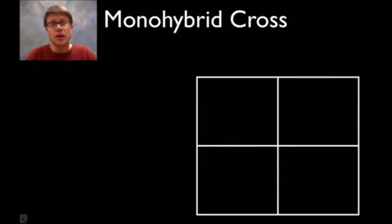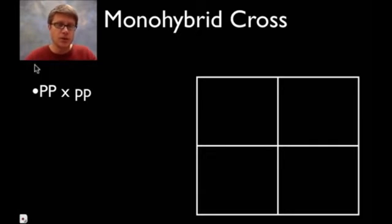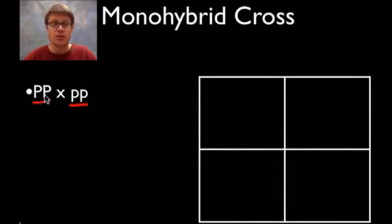Let's start with a monohybrid cross. A monohybrid cross is simply a cross that is looking at one trait. Let's do one that's really simple. Let's say we're crossing purple flowers that are homozygous purple with those that are homozygous white flowers. This is the dominant trait, this is the recessive trait.